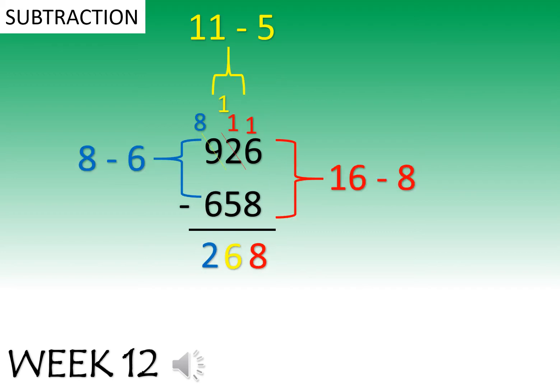Subtraction with 3 digits. Always start with the number on the right. 6 take away 8. You cannot. So you borrow from your friend. And it becomes 16. 16 take away 8 equals 8.